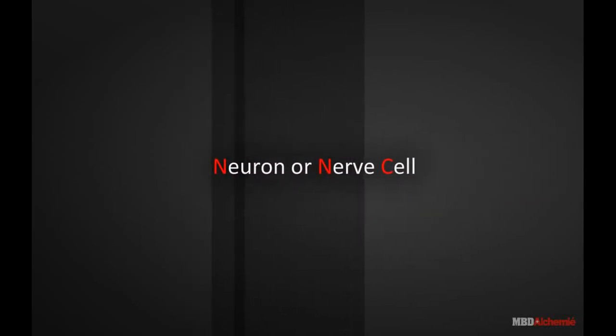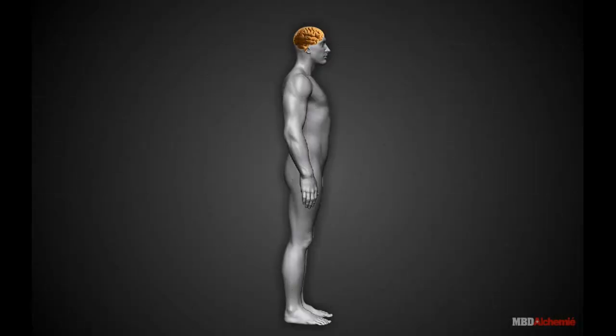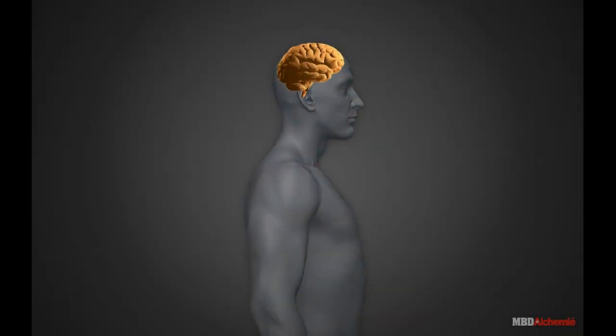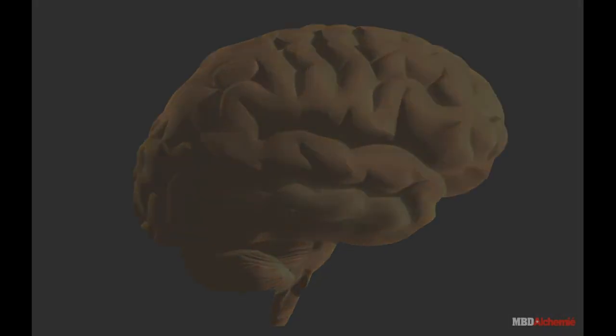Neuron or Nerve Cell. In animals, control and coordination are provided by nervous and muscular tissues.